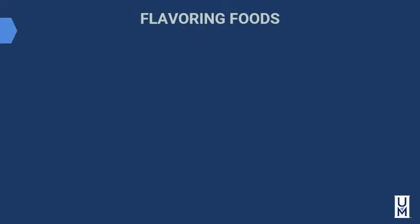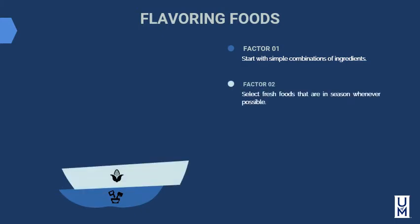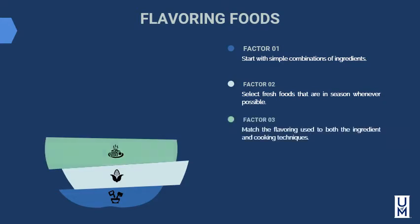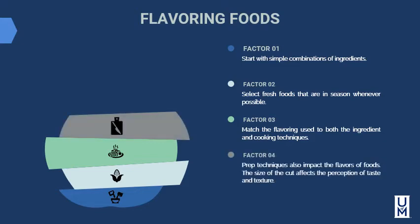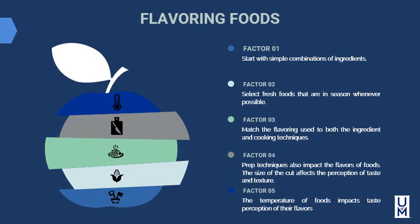There are five factors associated with flavoring foods. Factor one: start with simple combinations of ingredients — often the simplest combinations are the best. Factor two: select fresh foods that are in season whenever possible — take the best ingredient you can find and do very little to it. Factor three: match the flavoring used to both the ingredient and the cooking technique, as some flavors are more delicate. Factor four: prep techniques also impact flavor — the size of the cut affects the perception of taste and texture. Factor five: the temperature of foods impacts the taste perception of the flavors.